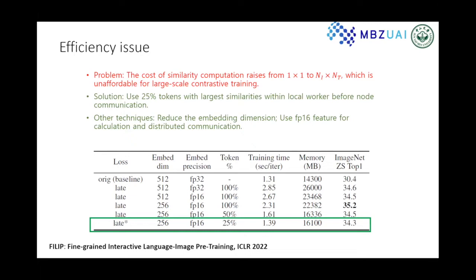Since cross-modal interactions rely on token-wise representations, this can be very inefficient in terms of memory and computation, especially with large batch sizes. We propose to use the top 25 percent of tokens with large similarities within each local patch. We also reduce the embedding size and use half-precision features for communication. With these optimizations, FILIP occupies only slightly larger memory than CLIP.